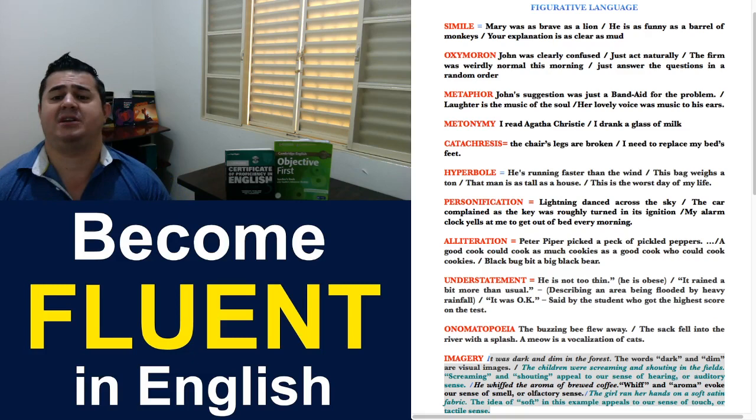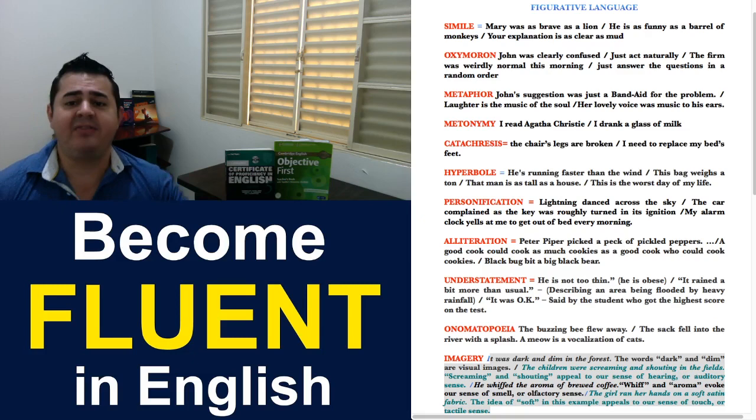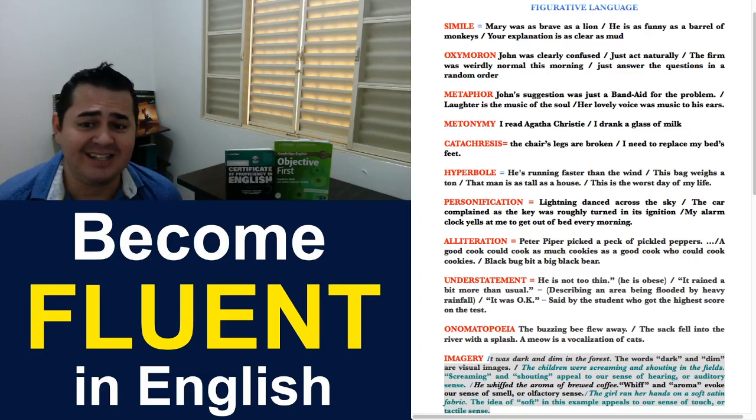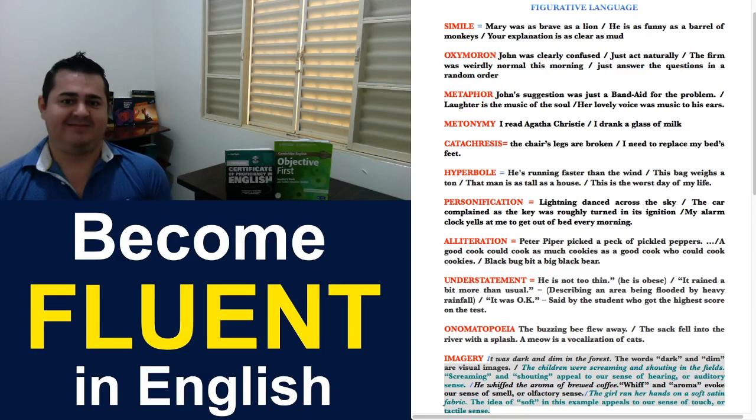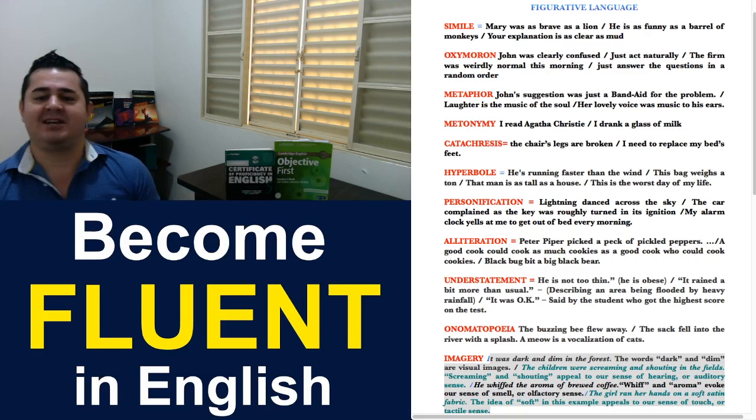Next one: Hyperbole. Hyperbole is basically an exaggeration, or over-exaggeration. So, when they say, he's running faster than the wind, we know that's impossible. Everybody knows that it's impossible to run faster than the wind. But, this exaggeration means that he's running the fastest he can. Second example: His bag weighs a ton. Of course, his bag doesn't weigh a ton. But, the impression you have when you try to carry the bag is that it's so heavy that it weighs a ton.